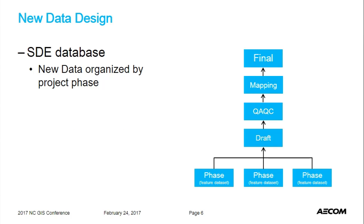For new data that we received along the process of this project, new data is organized according to phase. The project is organized according to different phases along lines of surveying gas lines, designing new gas lines, and also installing gas lines. So data that we receive along these stages is organized according to phase instead of source, and versioning is done along the same way.